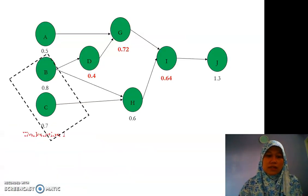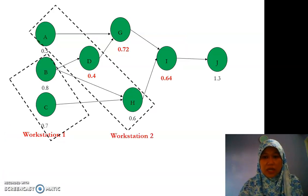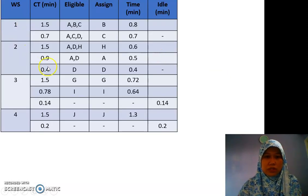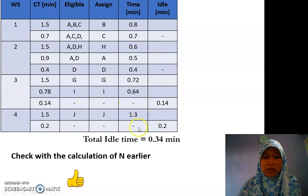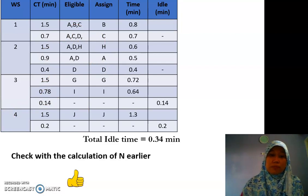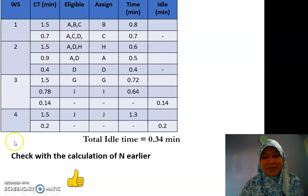We have assigned all the tasks: workstation 1 has B and C, workstation 2 has A, D, and H, workstation 3 has G and I, and workstation 4 has J. Looking back, all tasks fit into the workstations. The total idle time is 0.34 minutes. We have 4 workstations for all tasks, confirming our calculations are correct. I hope this tutorial helps you in solving line balancing problems. Thank you very much, see you.